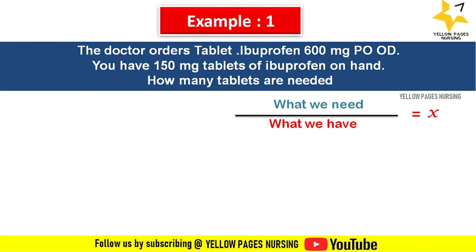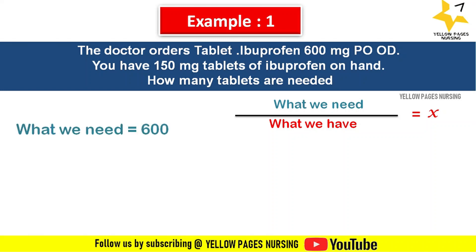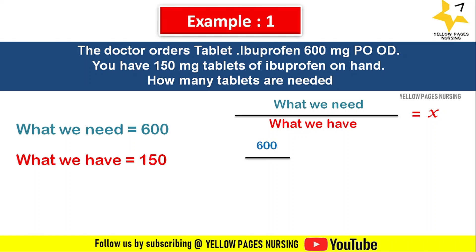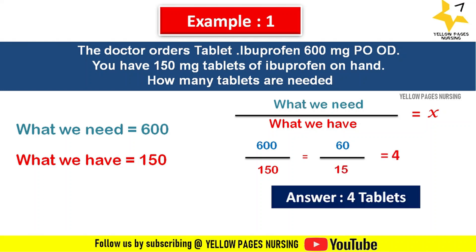What we need is 600 milligram — that is the doctor's order. What we have is 150 milligram per tablet of ibuprofen. Applying this into the formula, we get 600 divided by 150, which is 60 divided by 15, giving the answer 4. Hence we need to give 4 tablets.